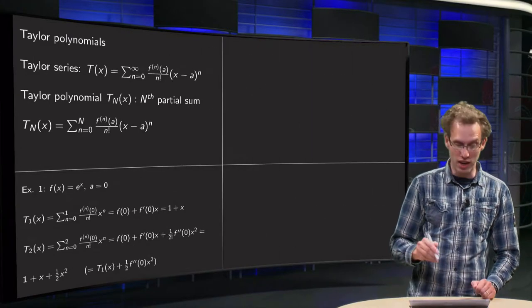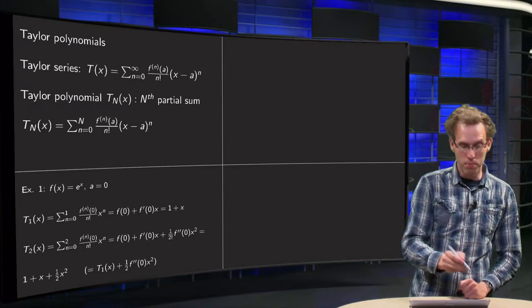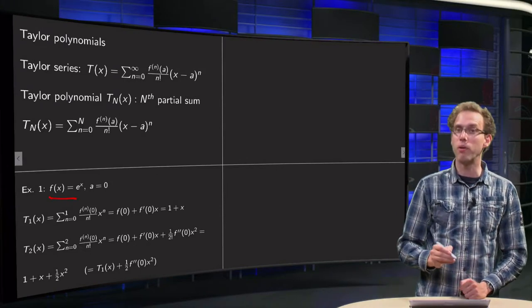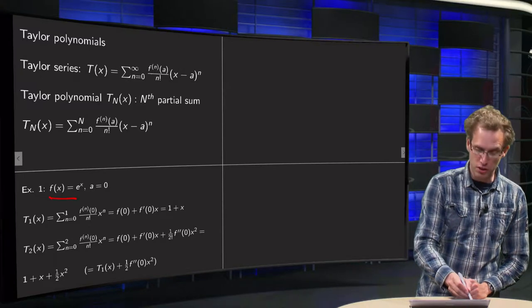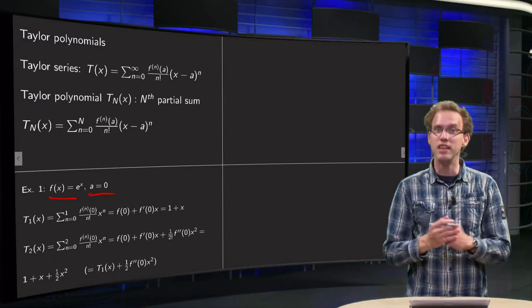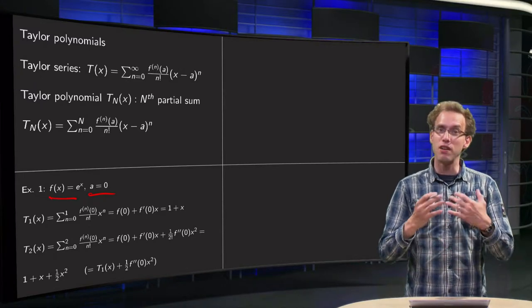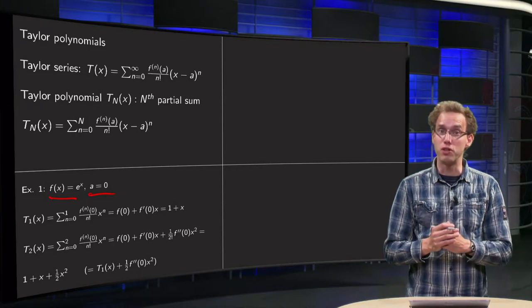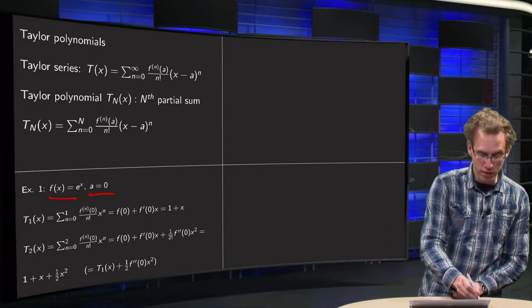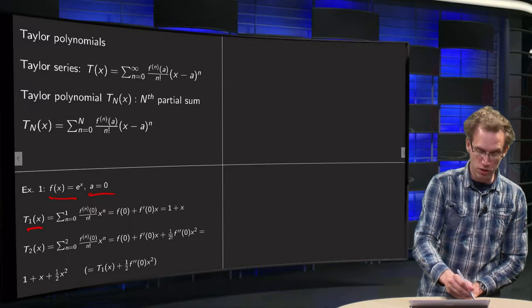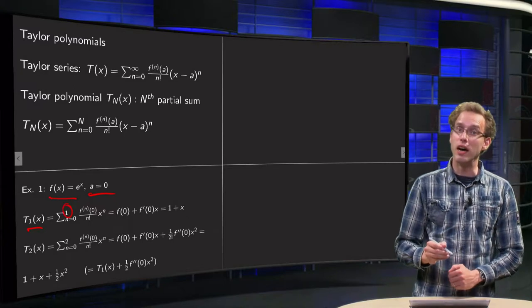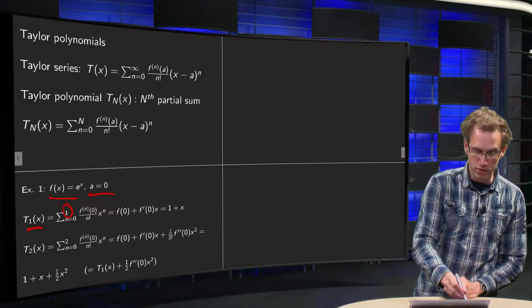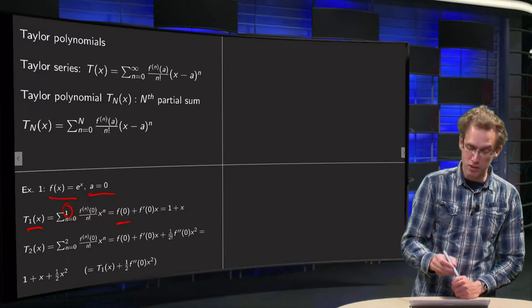So let's give it a try. Let's take our example f(x) equals e to the power x, and let's take our center point a equals zero. Let's take an easy example. And say we want to compute the first Taylor polynomial T1 of x. So that means we have to sum up to one.